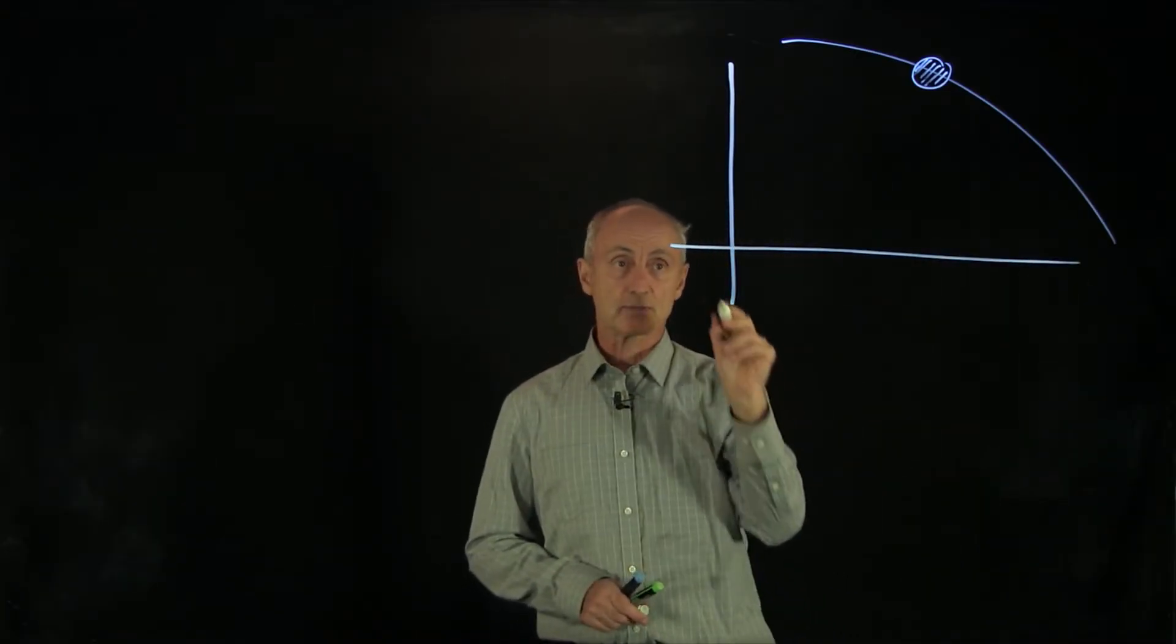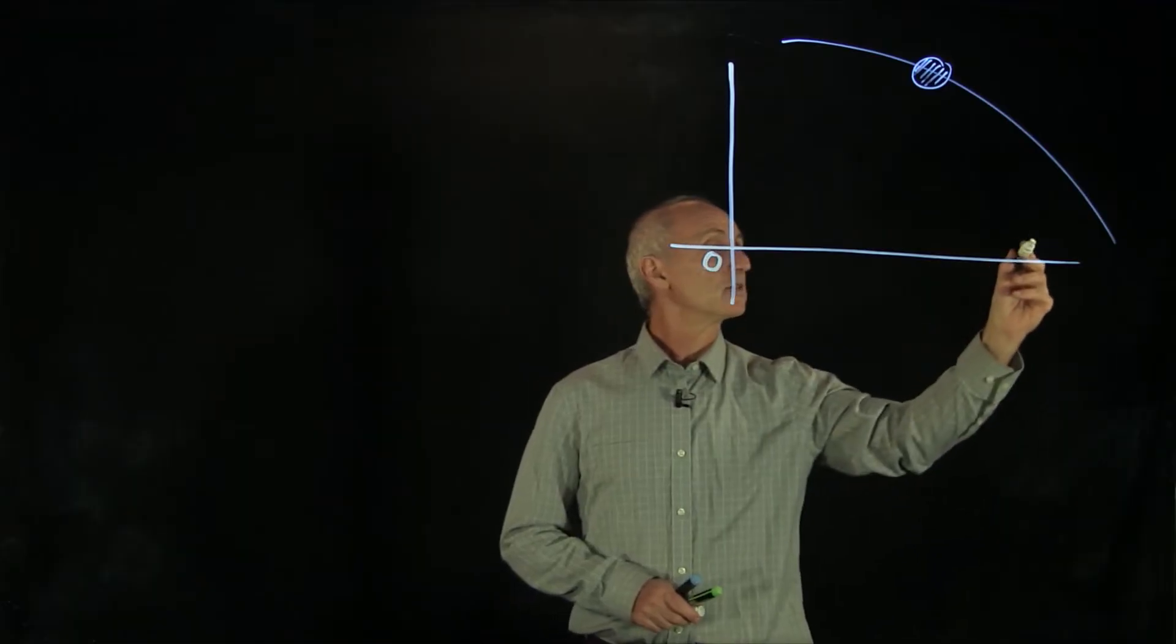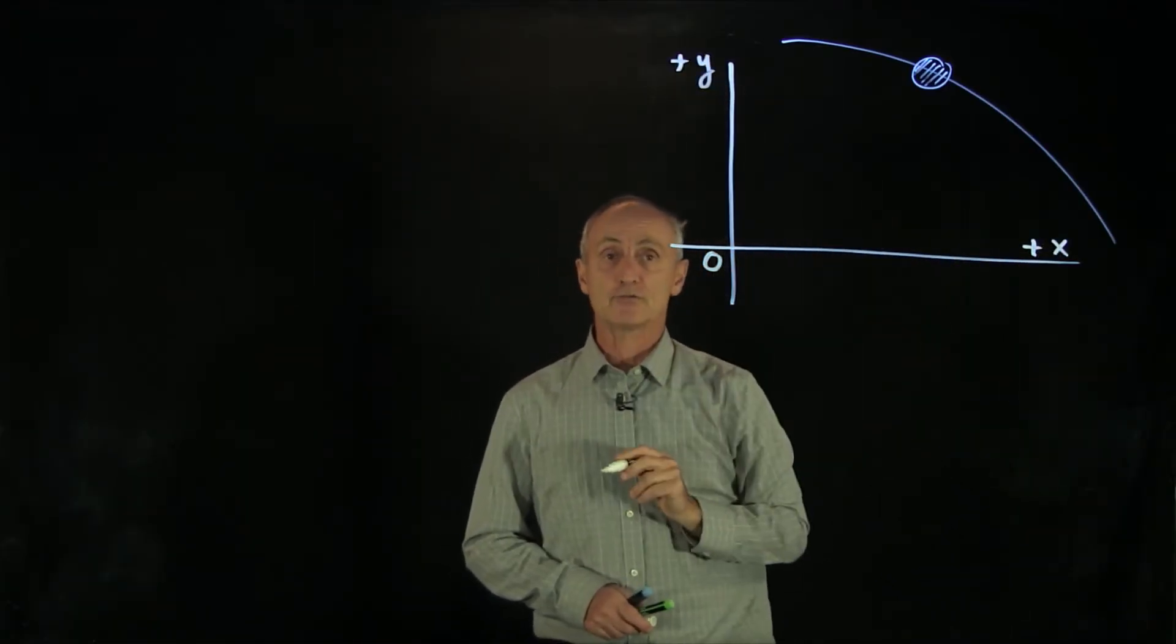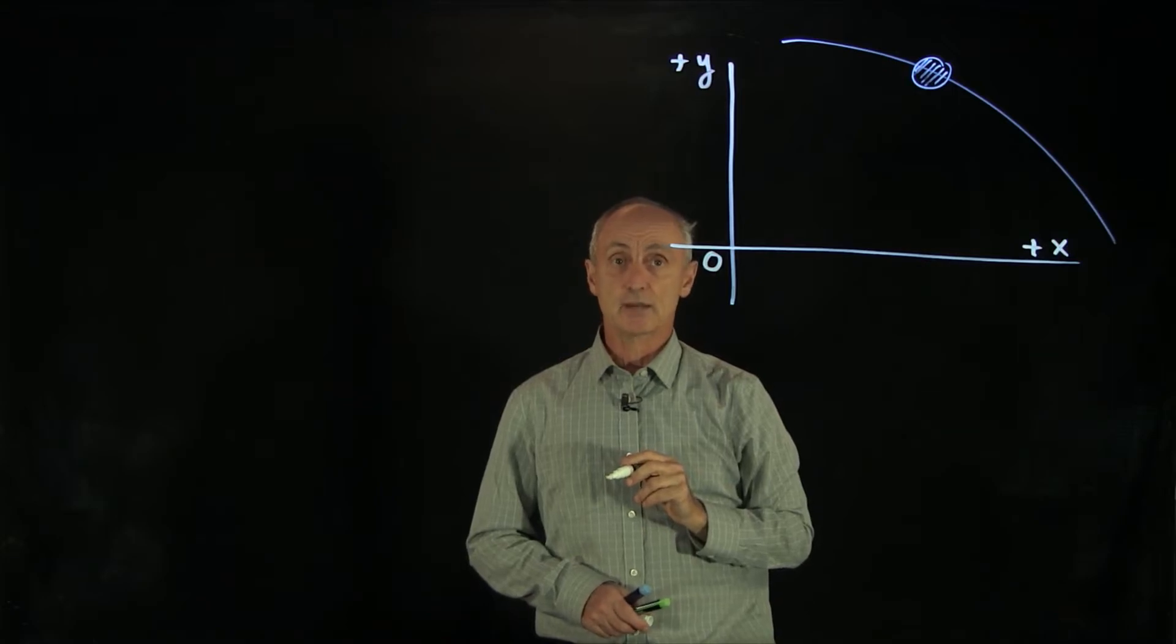Now, what does a coordinate system consist of? It consists of an origin. It consists of two axes. In this case, we'll identify the positive direction for each axis as plus x and plus y.